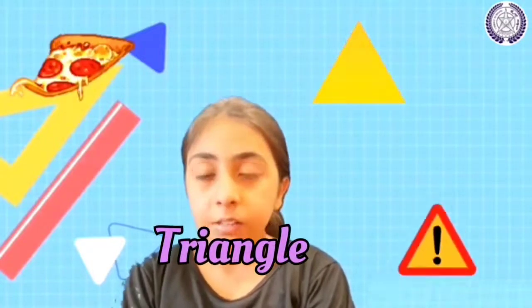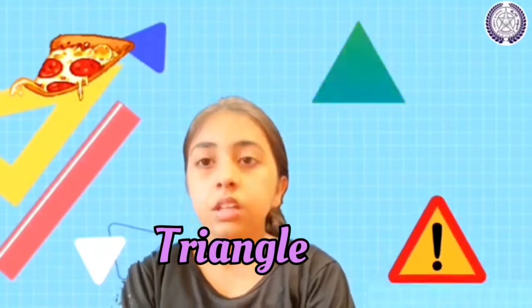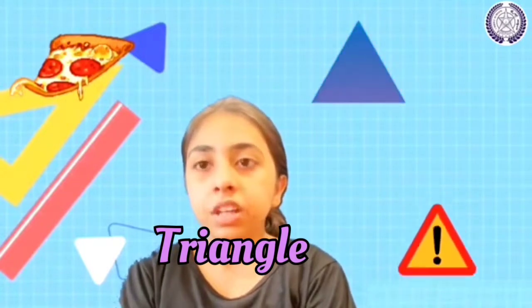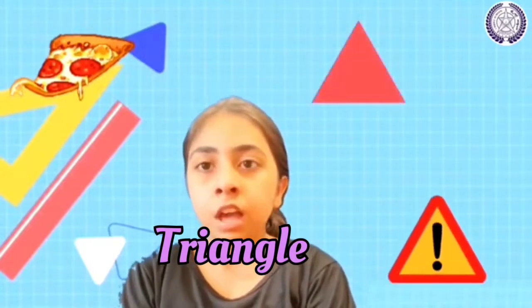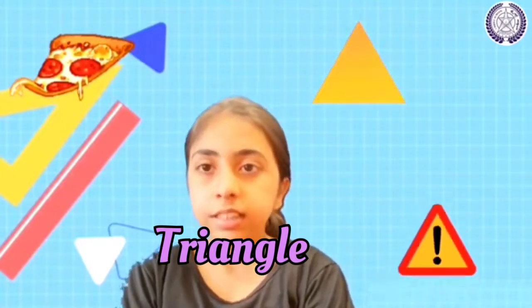There are many types of polygons. The smallest polygon is a three-sided polygon which is called a triangle. Some of the examples are shown on the screen.